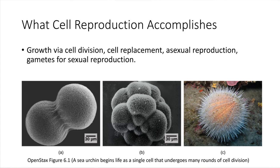Cells are capable of reproducing themselves, and this is very important because it allows a number of really critical things to happen for organisms. The fact that cells can reproduce and grow and divide is essentially what allows our bodies to get larger over time. We start out life very small and we continually grow until we reach adulthood, and then there's still a lot of maintenance that needs to take place even in a fully grown adult, and cell division is really critical for all those processes.